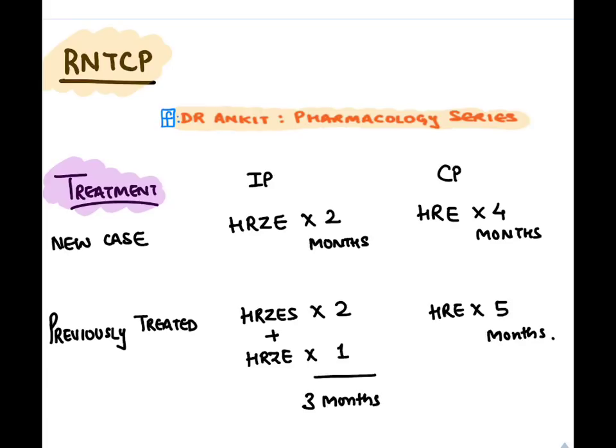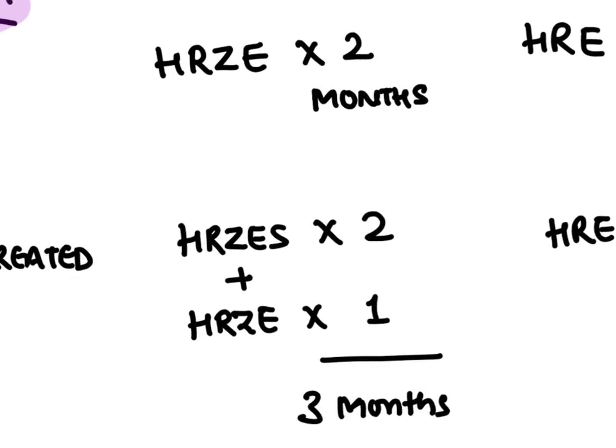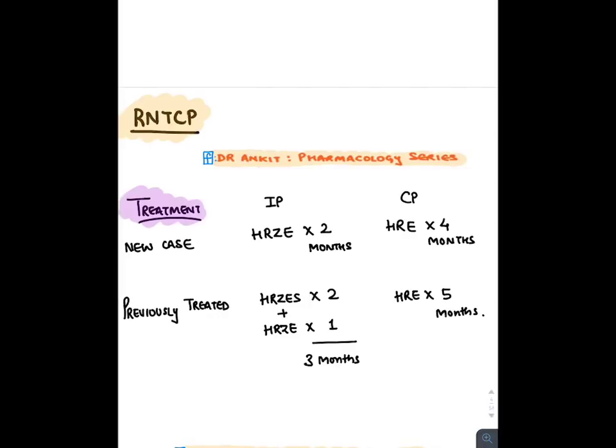For previously treated patients, we also add S for streptomycin. Remember, streptomycin is not a first-line drug — it is a supplemental drug. We give all 5 drugs (HRZES) for 2 months, then remove streptomycin and continue with HRZE. In the continuation phase, HRE is given — removing pyrazinamide — for 5 months. Total duration for previously treated patients is 8 months.